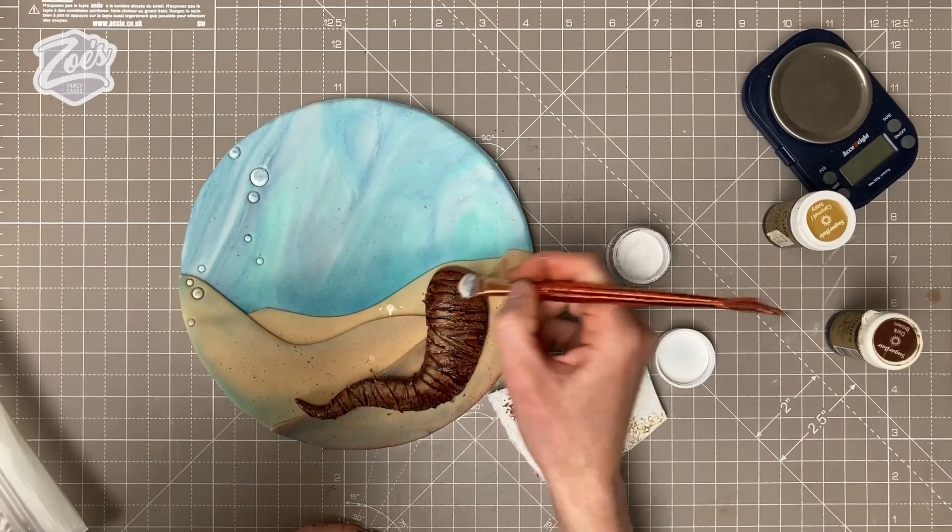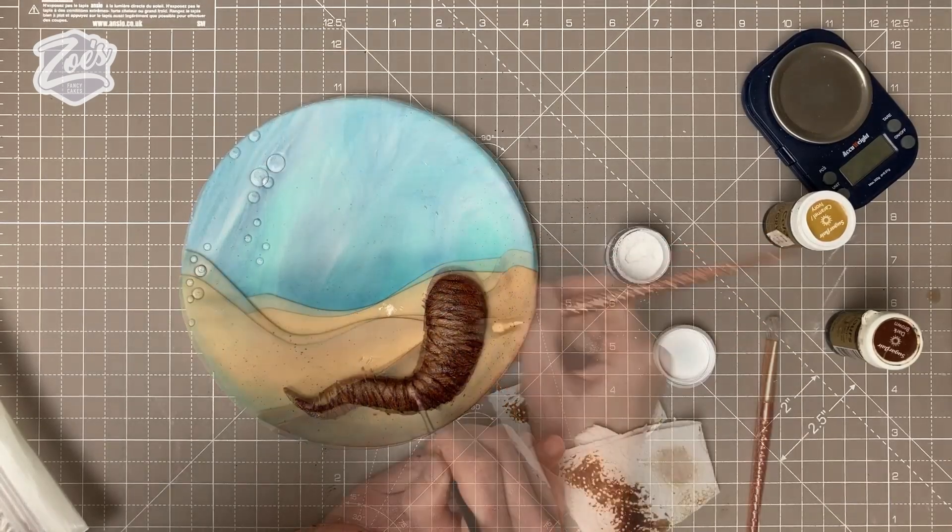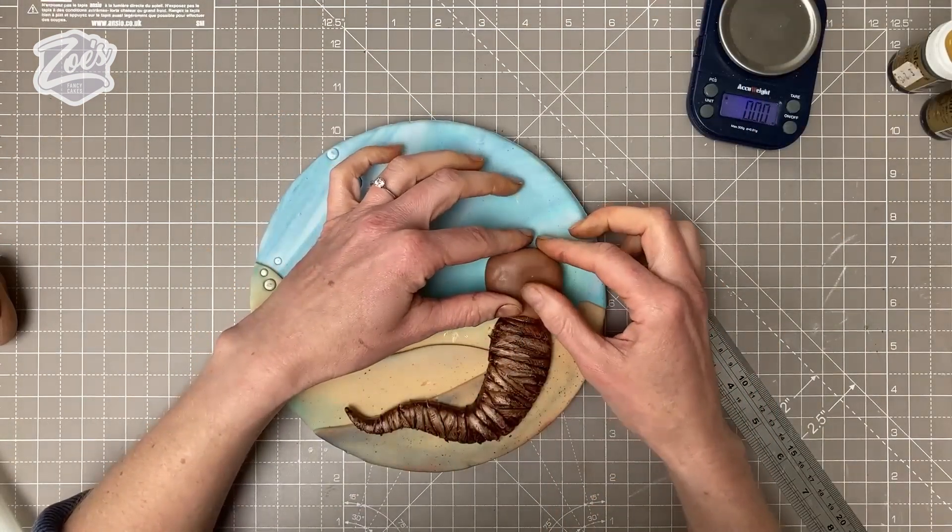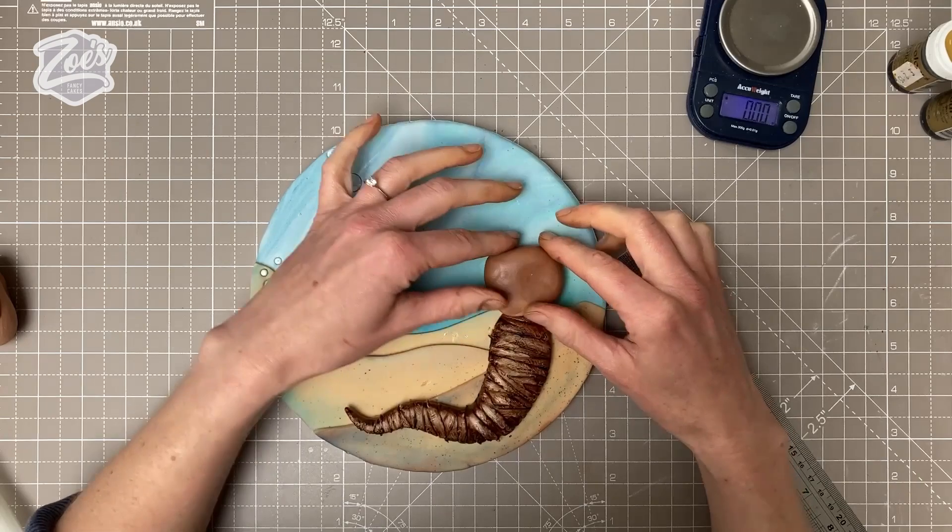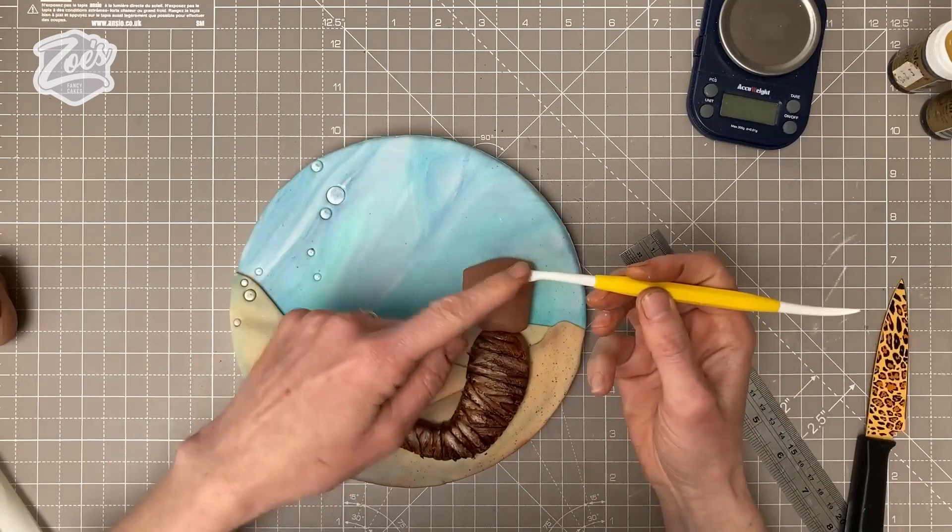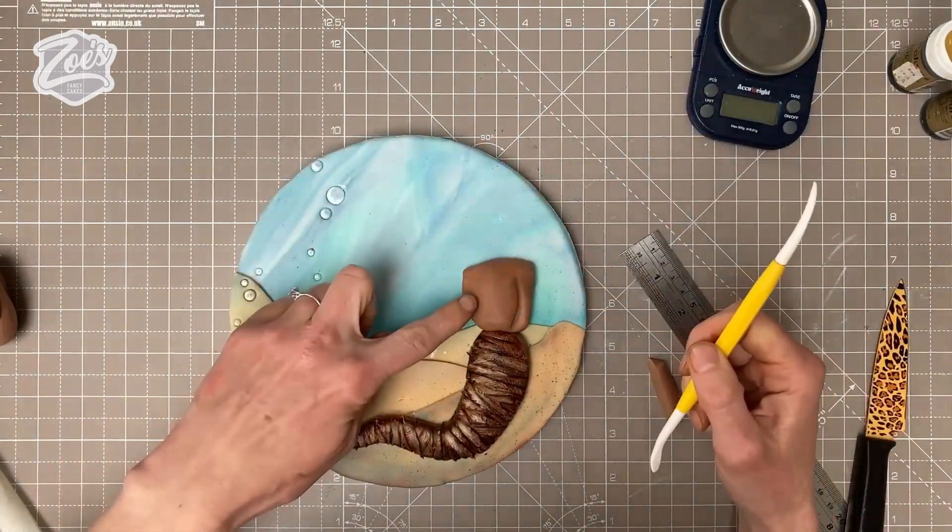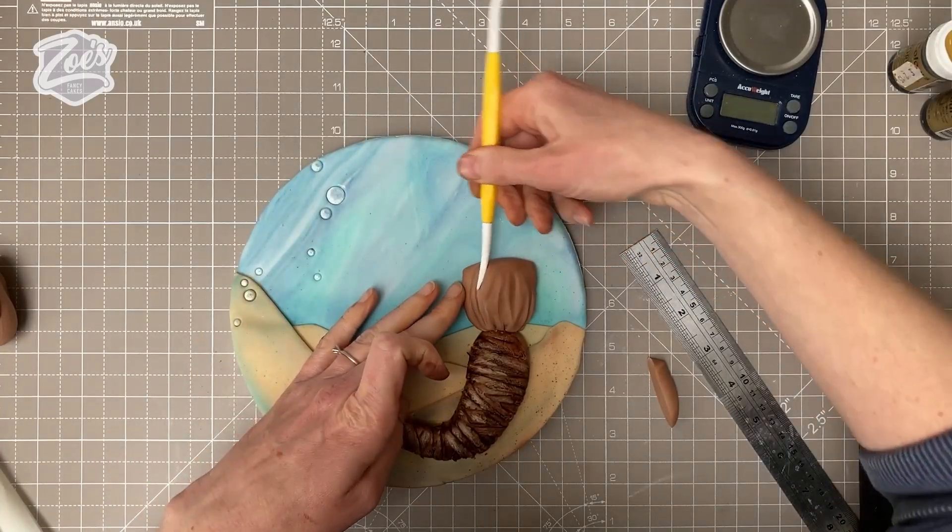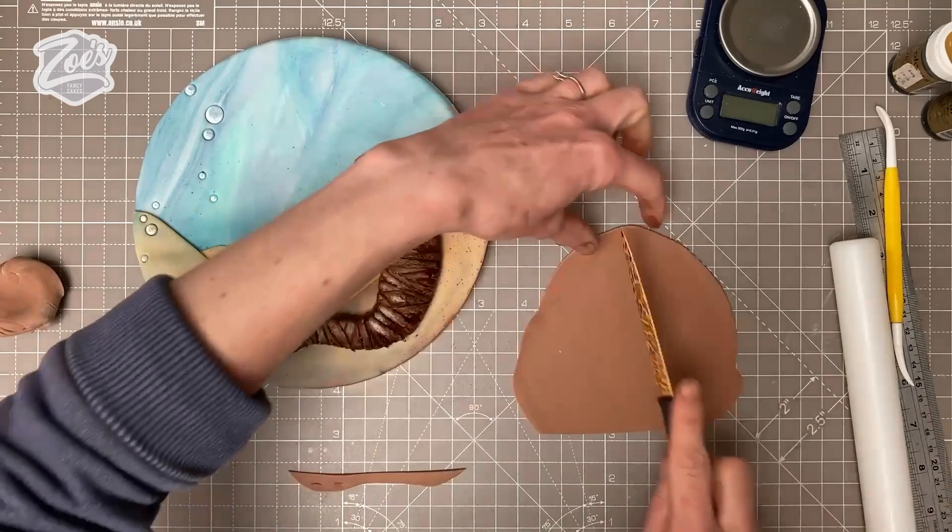Now for our body. We're going to squeeze a bit more brown on there and put some little lines in coming from the waist upwards, so it looks a bit like folds in fabric. We're going to roll some of the brown nice and thin.